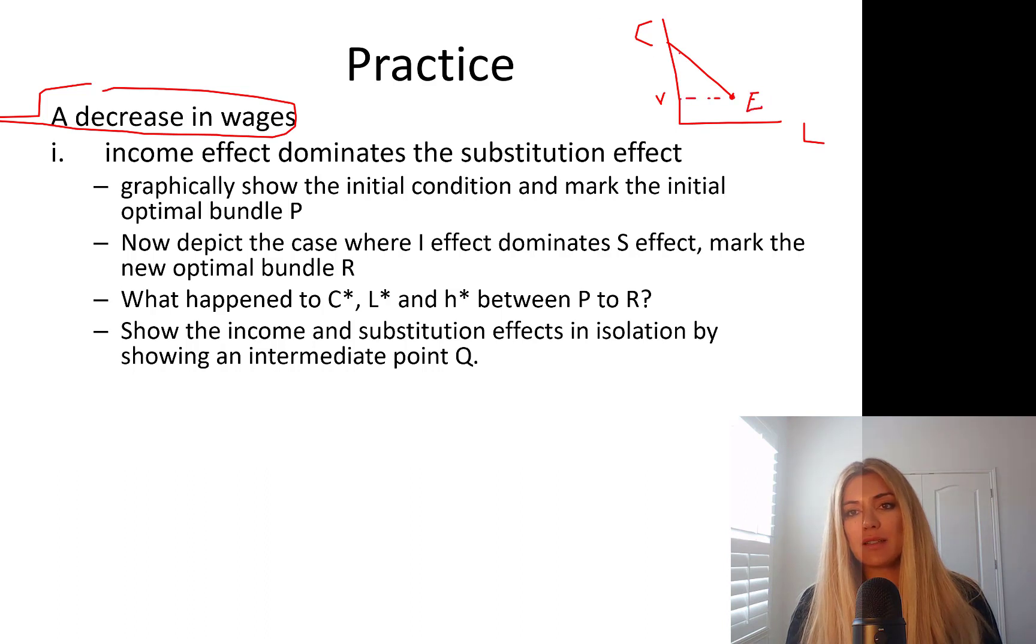Label V is non-labor income. Put everything. Slope is negative W.